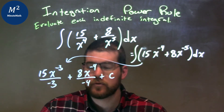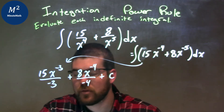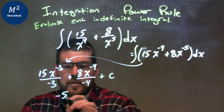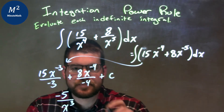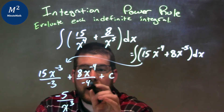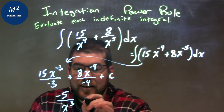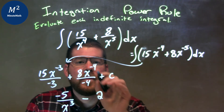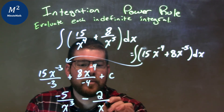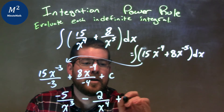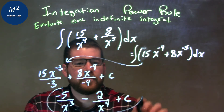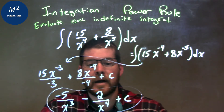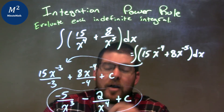Now we simplify. 15 divided by negative 3 is negative 5, so we have negative 5 out front, and we bring the exponent back to the denominator: x to the positive 3rd power. Same thing with the 8: 8 divided by negative 4 is negative 2, and that exponent goes back in the denominator as x to the positive 4th power. So our final answer is negative 5 over x to the 3rd, minus 2 over x to the 4th, plus C.